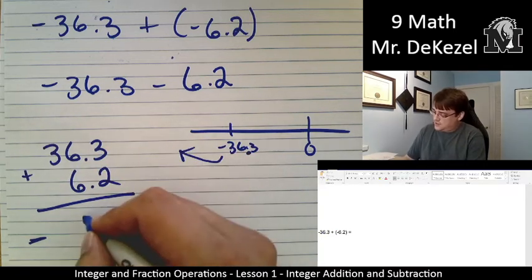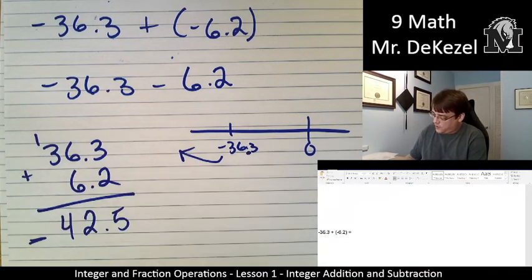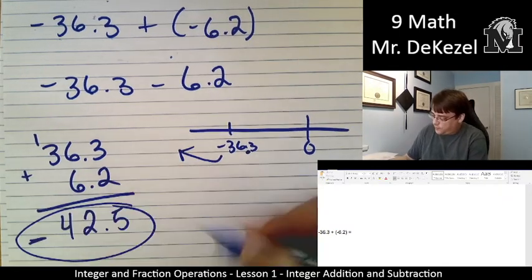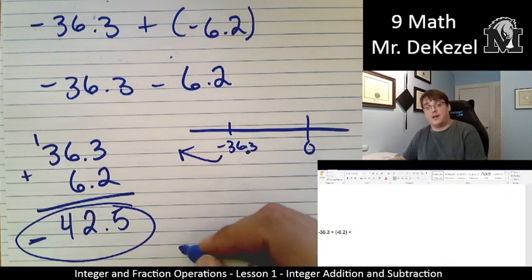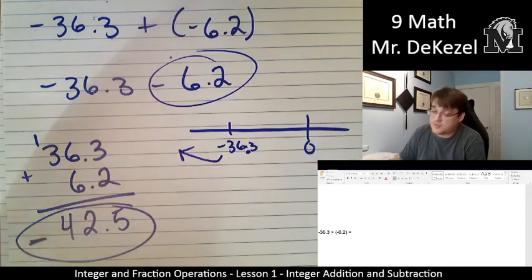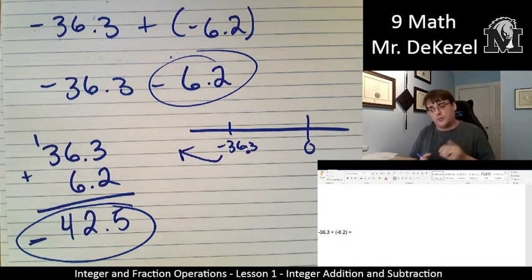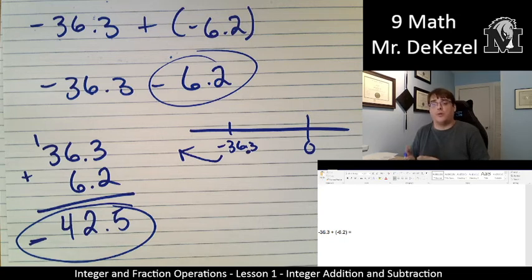So we have 36.3 and 6.2. And we're going to add them. And I'm just going to know at the end that the value is negative. 3 plus 2 is 5. 6 plus 6 is 12. And then 1 plus 3 is 4. So we're left with negative 42.5. We would get more in the negative direction. This makes sense. It's not too far away. And we're adding a very small number to it. So when you are moving in the same direction, you're not moving over zero, you can add them. And when you're moving over zero, you can subtract them and just know what sign your value needs to end up as.